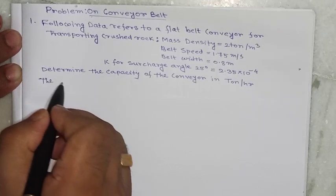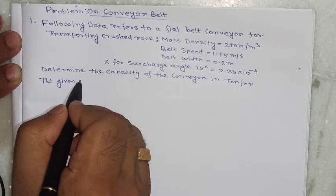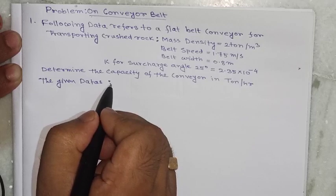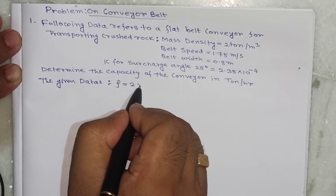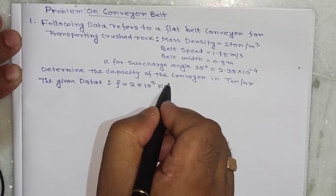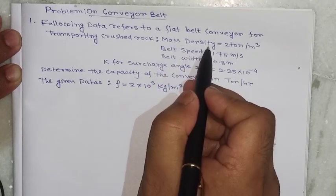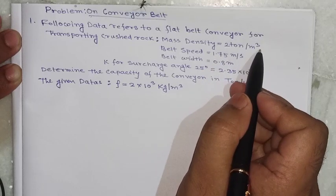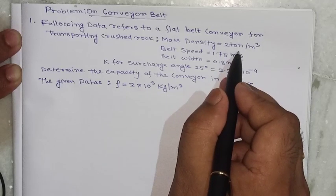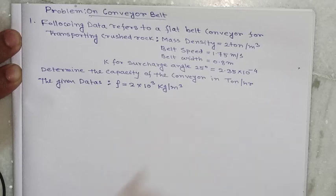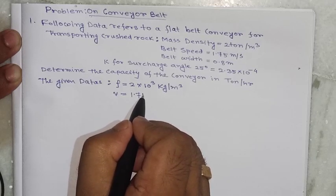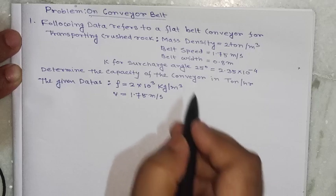Given data: rho equals 2 into 10 to the power 3 kg per meter cube. Mass density equals 2 ton per meter cube — I have multiplied with 10 to the power 3 so that it converts to kg per meter cube. Belt speed v equals 1.75 meter per second.